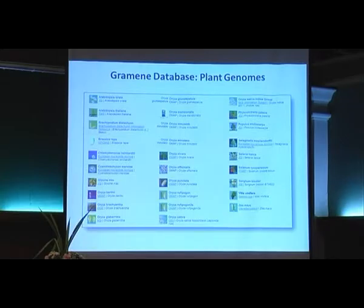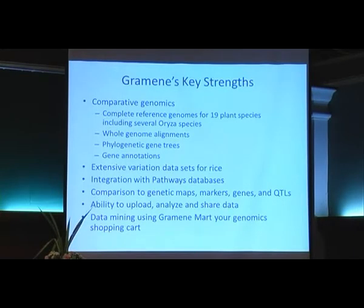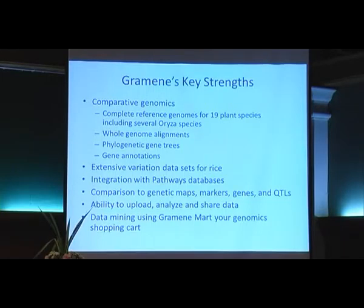You can go from genome-level view to the base-pair level view and compare across genomes. The key strengths include comparative genomics with 19 to 20 genomes, whole genome alignments, and phylogenetic gene trees — all genes from these genomes are aligned and put into gene phylogenetic trees. You don't have to run your own RAxML; it's all pre-computed for you, and you can download the trees and alignments. There is also extensive variation data coming from the rice SNP project and other published projects.